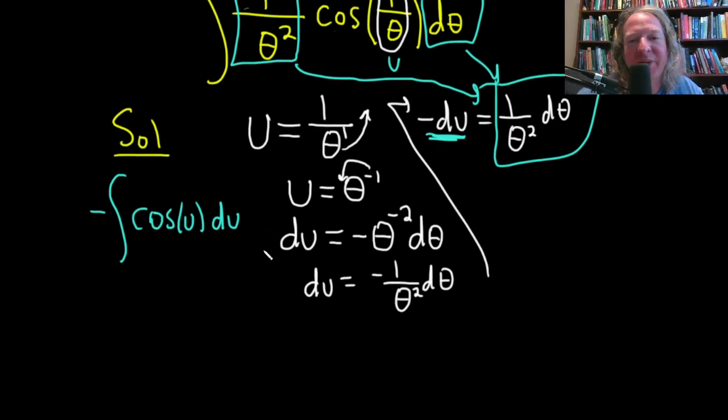Perfect. Now we're ready to integrate. So if you have this memorized, the integral of cosine, that's good. If you don't, just try to think backwards. What's a function whose derivative is cosine? Well, sine.